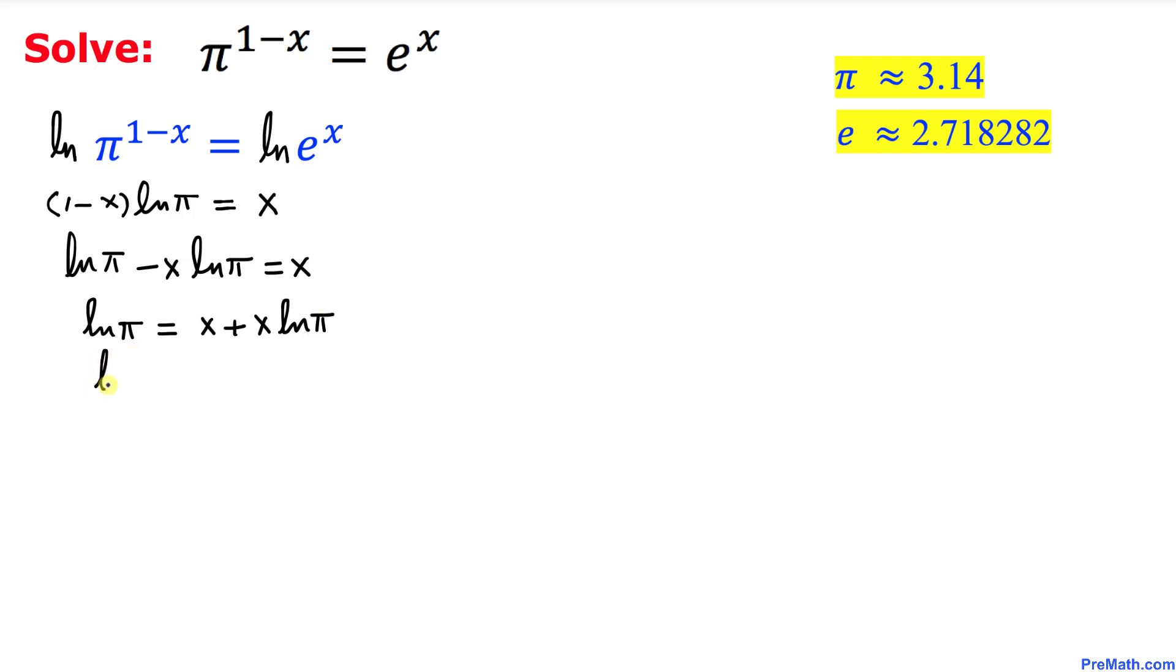And now we can write ln(π) equals to, here we can factor out x. If we factor out x we are left with 1 + ln(π).